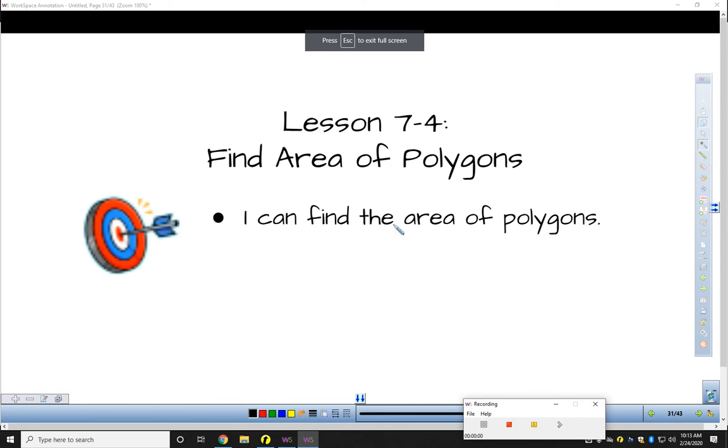Section 7-4, last section before the quiz, where we're going to find the area of different polygons. Our goal here is that we can take different polygons, different flat two-dimensional figures comprised of straight edges, closed figures, and we can find the area of those.